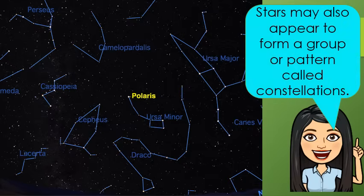Stars may also appear to form a group or pattern called constellations. Most constellations were named many years ago. People named stars after the shapes of animals or their gods.